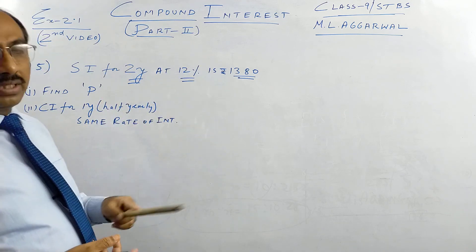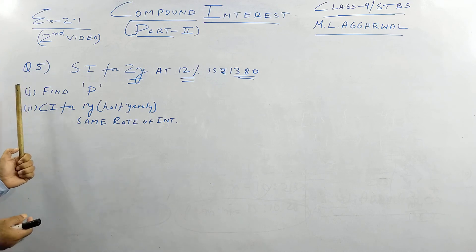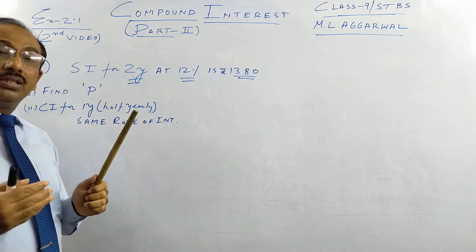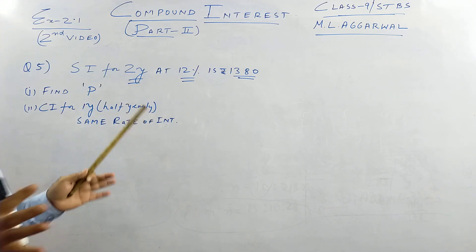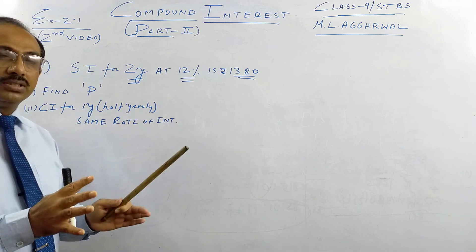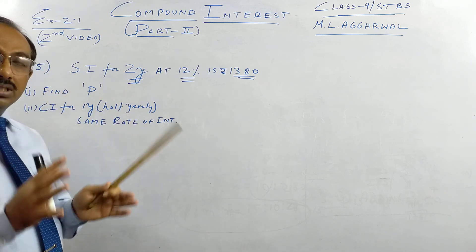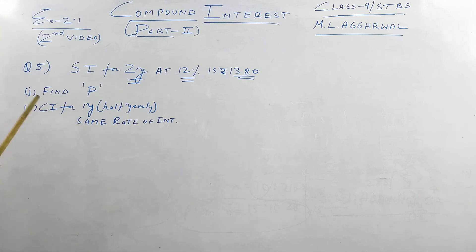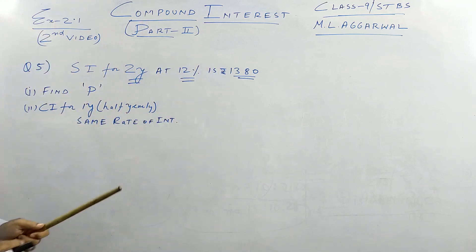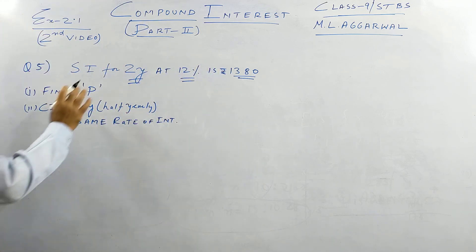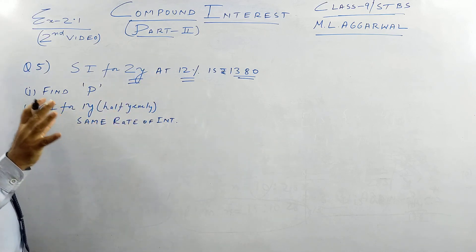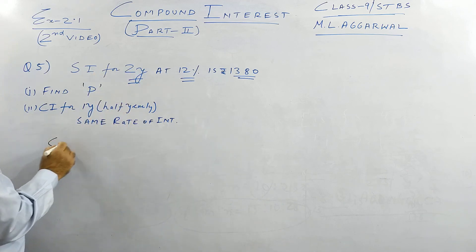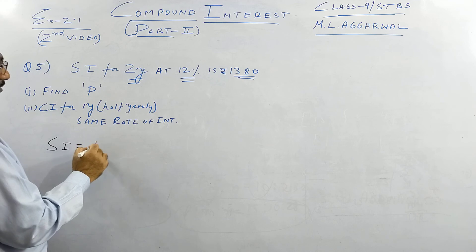Questions 1 and 3 were solved in part 1 of the video, where I also gave an introduction. If you are watching this directly, please go to part 1 first, then come back. So here is question number 5 from ML Agrawal's book, Exercise 2.1. SI for 2 years is given as 1380.